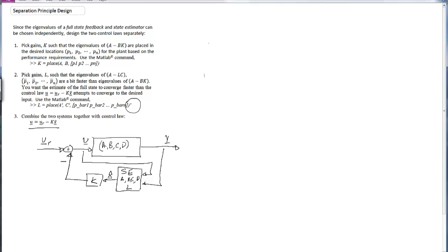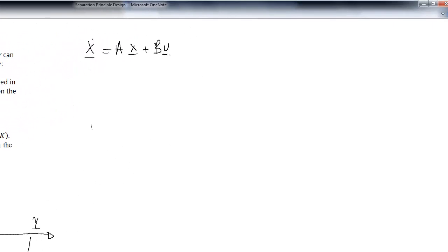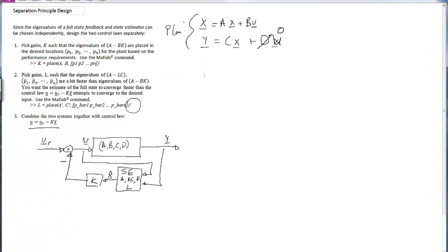The plant obviously has dynamics, which are X dot equals AX plus BU, and an output Y equals CX. Here we can have a D term, but in this case we've set D to zero. And the state estimator, so here's the plant and then the associated full state feedback law.